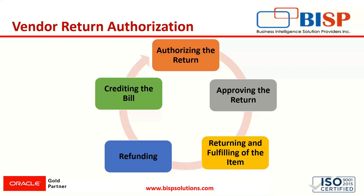The first step in the VRA process is we have to authorize the return — initiate the VRA process by authorizing the return. When the return is authorized and approved, the returning and fulfillment of the item is done. When the fulfillment is processed, the refunding of the item is done. The last step in the vendor return authorization process, after refunding, is crediting the bill. These are the steps in the vendor return authorization process.